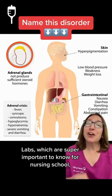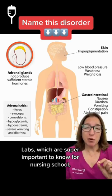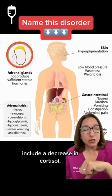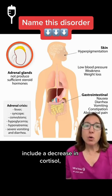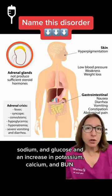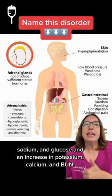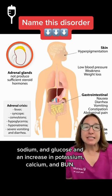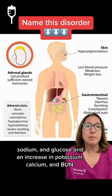Labs, which are super important to know for nursing school, include a decrease in cortisol, sodium, and glucose, and an increase in potassium, calcium, and BUN.